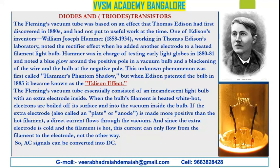When Edison patented the bulb in 1883, this phenomenon became known as the Edison effect. Thomas Alva Edison was a great scientist with many contributions. Fleming's vacuum tube essentially consisted of an incandescent light bulb with an extra electrode inside. When the bulb's filament is heated white-hot, electrons are boiled off its surface into the vacuum inside the bulb. If the extra electrode — also called the plate or anode — is made more positive than the hot filament, a direct current flows through the vacuum.